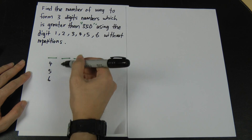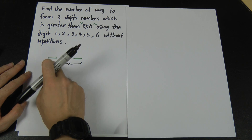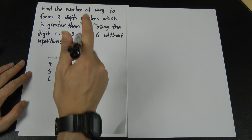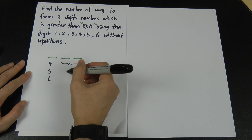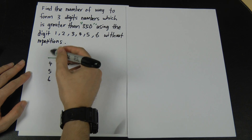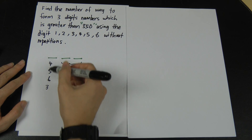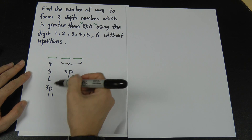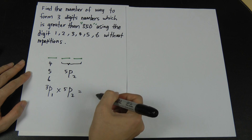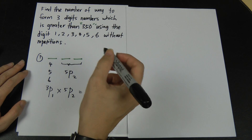If the first digit is 4, 5, or 6, that gives us 3 choices for the first place. For example, if I choose 4 for the first place, I still have five remaining numbers to choose from for the other two positions. So for Case 1, I will multiply: 3P1 for the first place times 5P2 for the remaining two places.